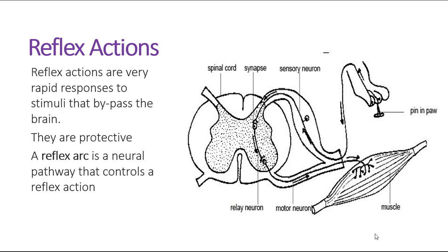Something else that our nervous system is capable of performing are what are known as reflex actions. In many scenarios, particularly situations that might be dangerous, we need to respond very rapidly in order to protect the body. If we had to spend time sending information to our brain, processing that information, consciously becoming aware and making a decision, that can take quite a long time in terms of our body's response, and by that time the damage could be done. If we want to respond almost instantaneously, we can bypass the brain altogether, and the spinal cord can act as our processing center.